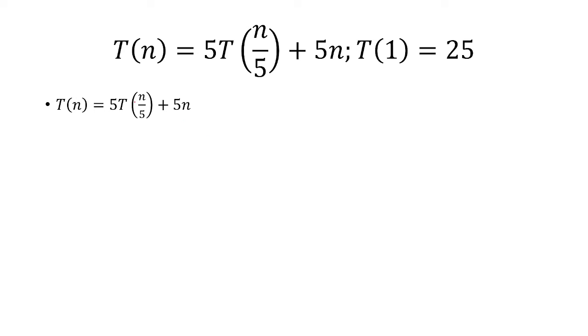So starting with T of n over 5, we're going to plug in n over 5 in for n here to have 5 times, and then 5 times T of n over 5 squared plus 5 times n over 5, and then plus 5n.